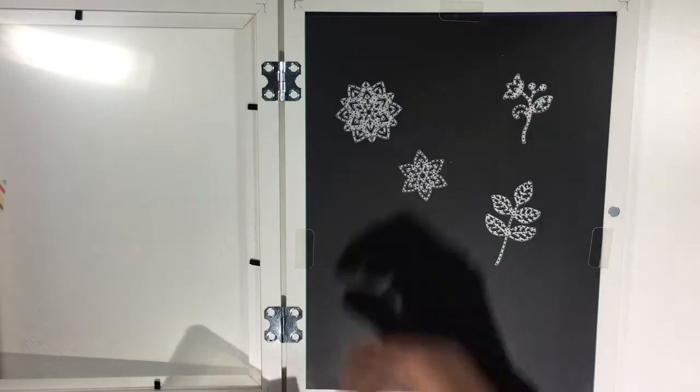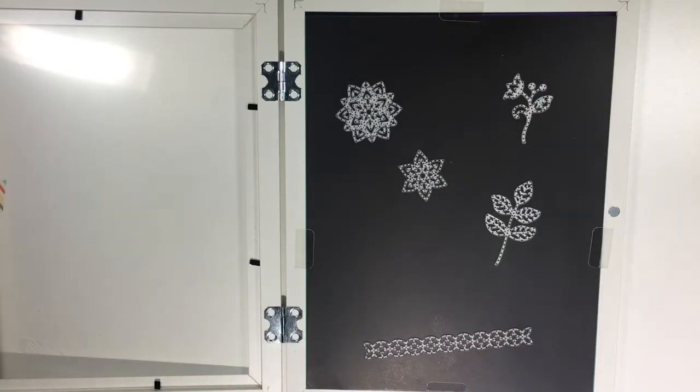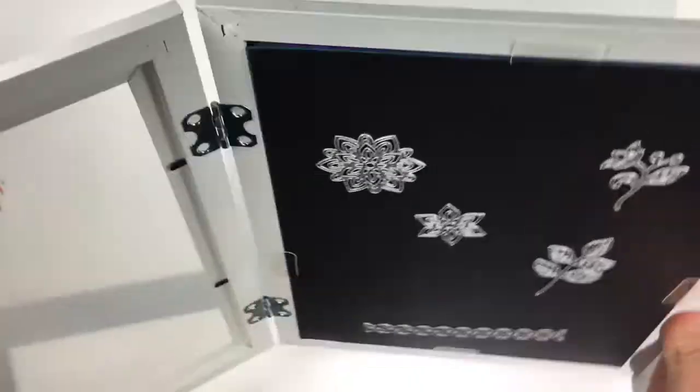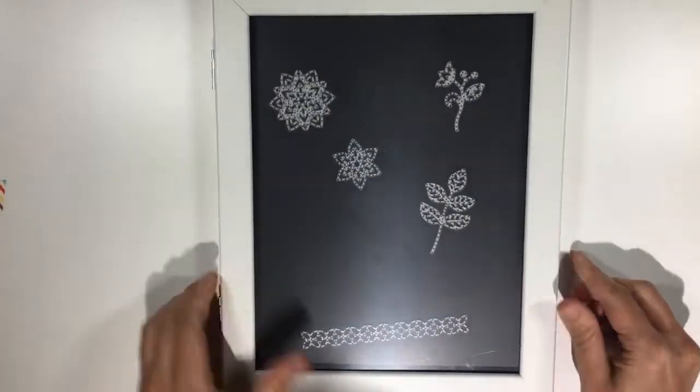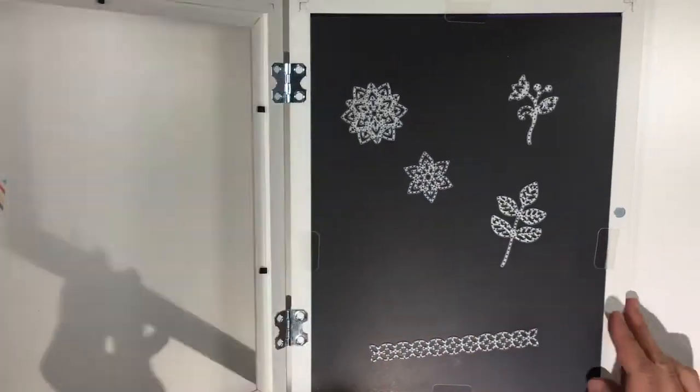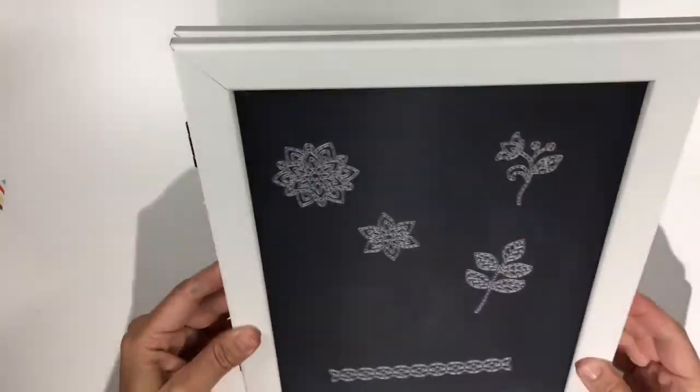All you have to do is stick your framelits to the magnetic sheet and close up the frame. This carrier is great for going to a party, taking your framelits just to the other room if you have friends over to stamp.